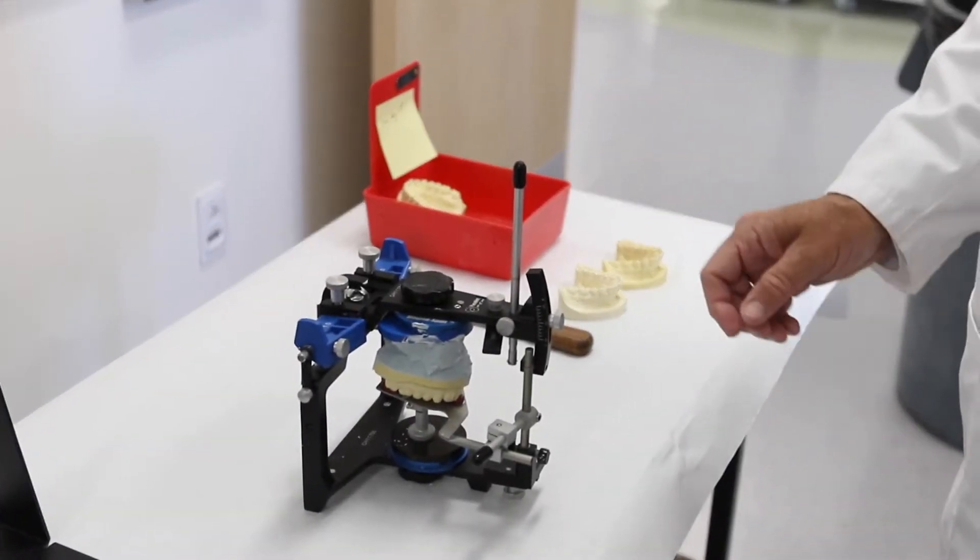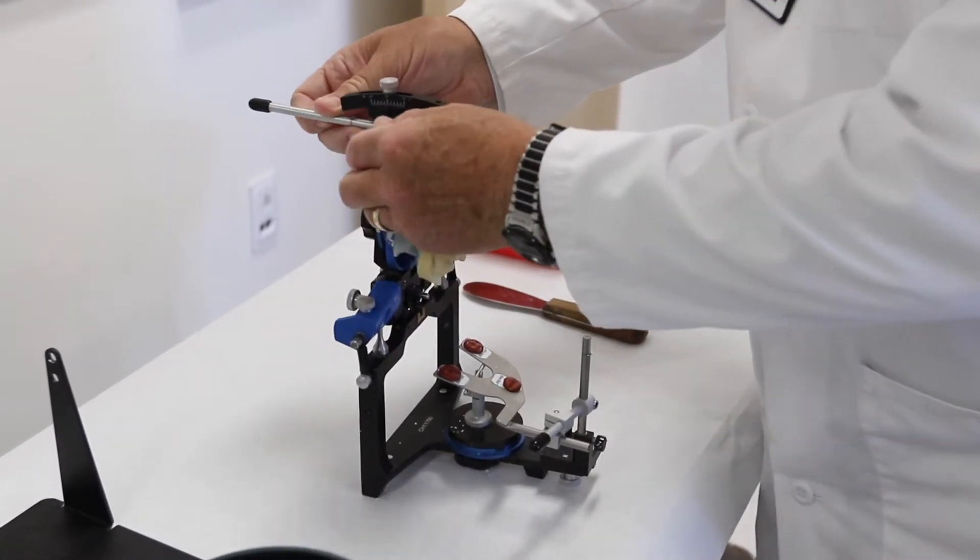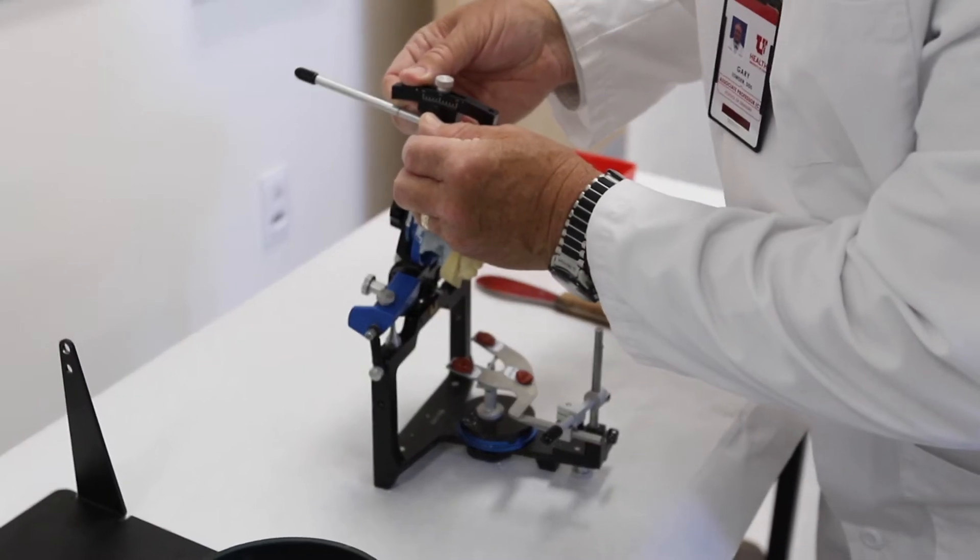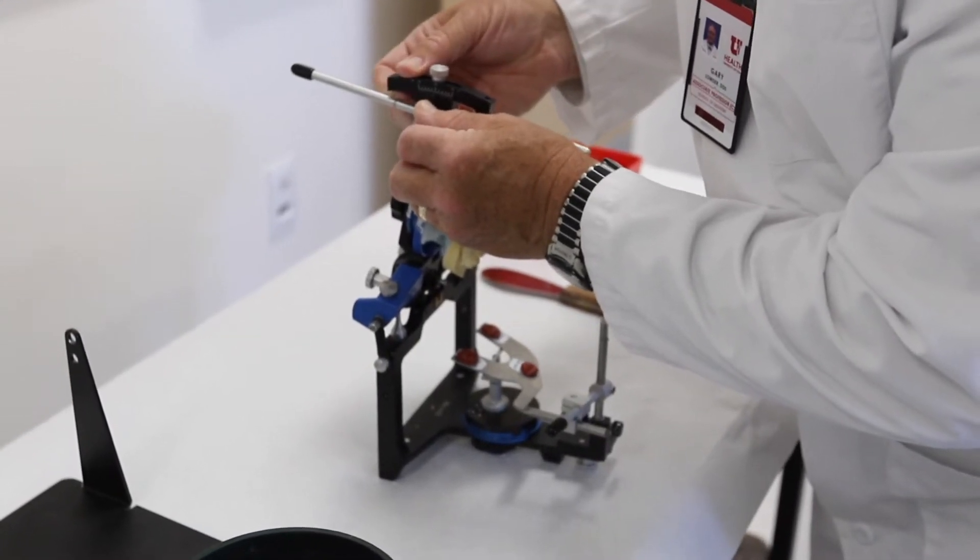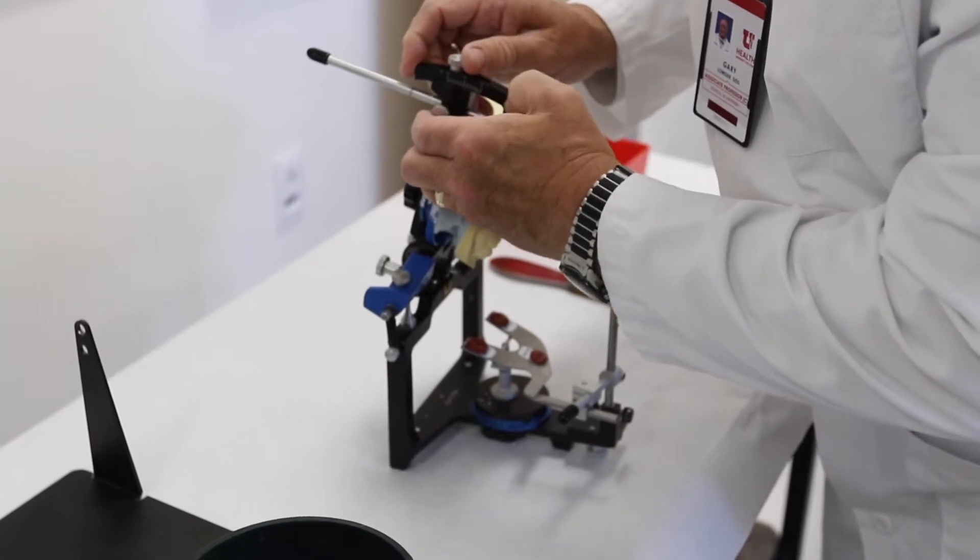So once your mounting stone is set you can now open your articulator. It's a good time then to change the setting on the incisal guide pin to a plus two, which will allow for the thickness of the wax record.